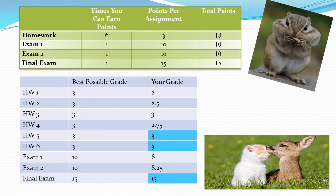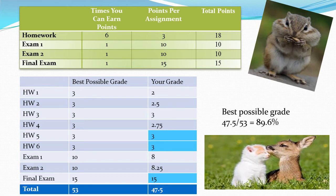The turquoise boxes are the grades you haven't received yet — homework five and homework six aren't due yet, and the final exam isn't due yet. We're going to put in the best possible grade you could get, imagining you earn 100% on all remaining assignments. So for those two homeworks, we imagine you get a 3, and for the final exam, a 15. That means the total possible points in the best-case scenario is 47.5 out of 53 points, giving you a best possible grade of 89.6%.